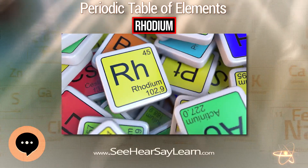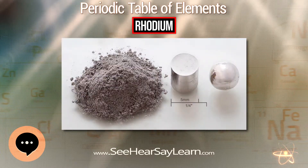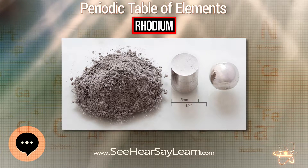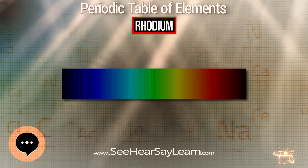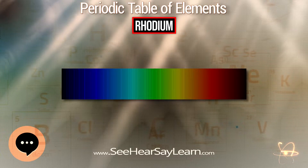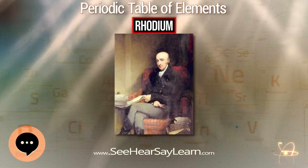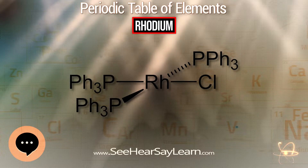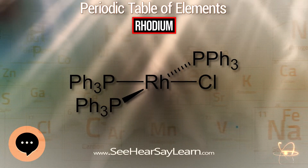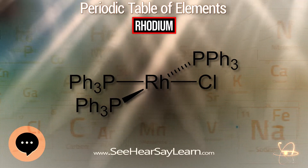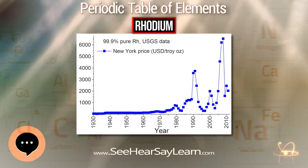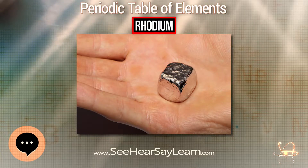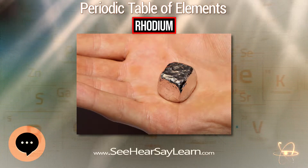The element's major use is as one of the catalysts in the three-way catalytic converters in automobiles. Because rhodium metal is inert against corrosion and most aggressive chemicals, and because of its rarity, rhodium is usually alloyed with platinum or palladium and applied in high-temperature and corrosion-resistive coatings. White gold is often plated with a thin rhodium layer to improve its appearance, while sterling silver is often rhodium-plated for tarnish resistance. Rhodium detectors are used in nuclear reactors to measure the neutron flux level.